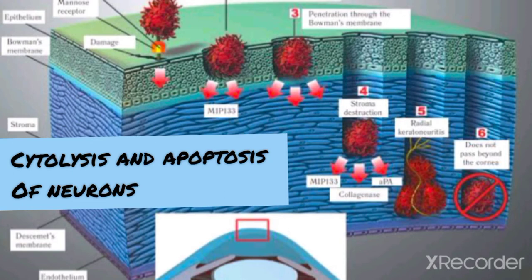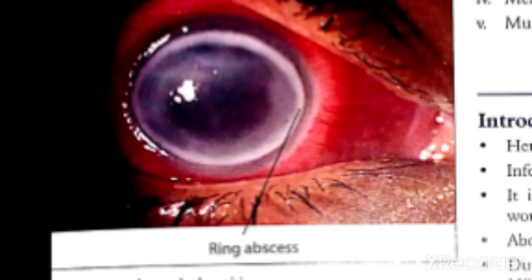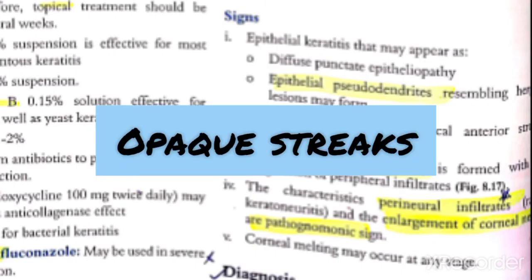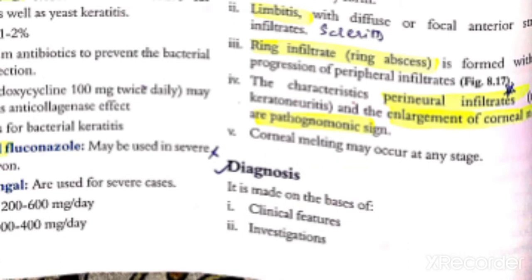Acanthamoeba causes apoptosis, which results in extreme pain. It goes into the stromal neurons and nerves and causes direct cytotoxic damage and apoptosis, which enlarges the corneal nerves and causes perineural infiltrates, resulting in the patient presenting with extreme pain. Additionally, a ring abscess is seen — as visible in figure 8.17 in your book — the abscess is present in a ring form. This is typical in acanthamoeba. Besides this, coarse opaque streaks (thread-like streaks) are also visible. These three are the typical signs of acanthamoeba keratitis.